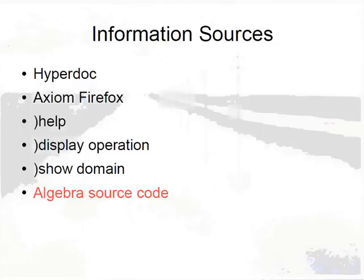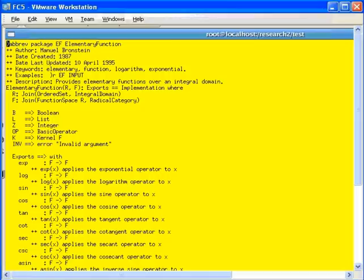Axiom is free and open source software and includes all of the source code for the algebra. This source code is gradually being collected into books available on the axiom-developer.org website under the documentation link. The algebra sources are included in the source distribution and are available in literate form in the binary distribution. The Axiom algebra sources contain exact information about how an operation is implemented. You can write your own algebra or modify the existing algebra, compile it, and use it in your own local copy of the system.